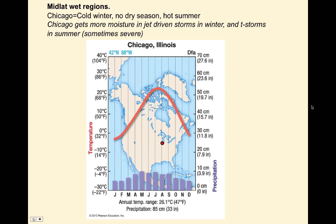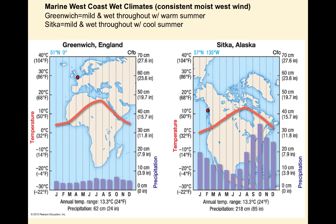Looking at the mid-latitude wet region: here's Chicago with a cold winter, no dry season, hot summer. You can see a large temperature range. Every month throughout the year has a decent amount of precipitation. They get moisture in jet-driven storms in winter and thunderstorms in summer — sometimes severe since the jet is close enough to provide wind shear for stronger storms.